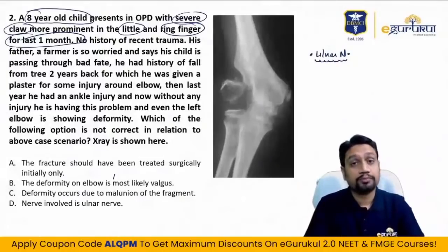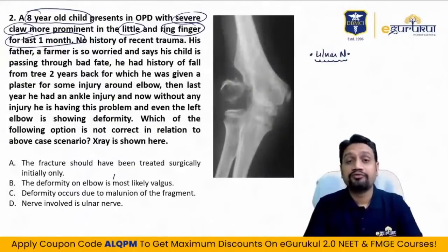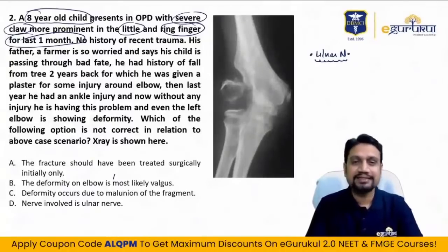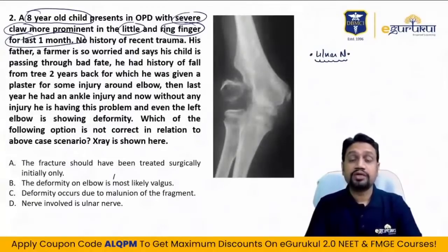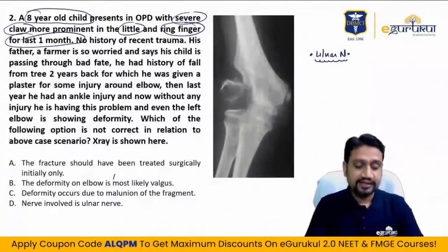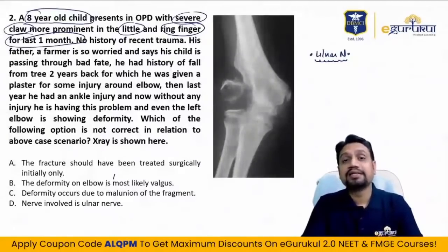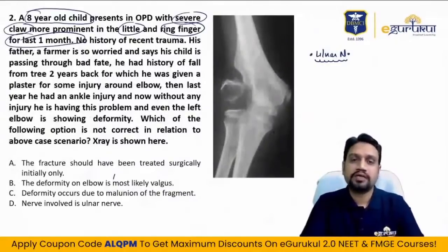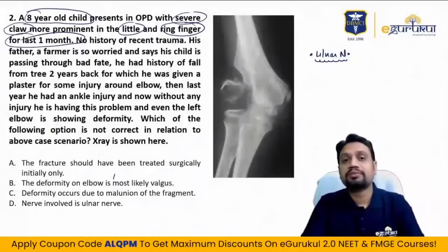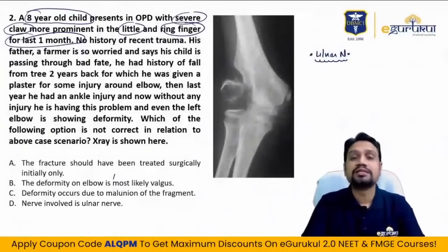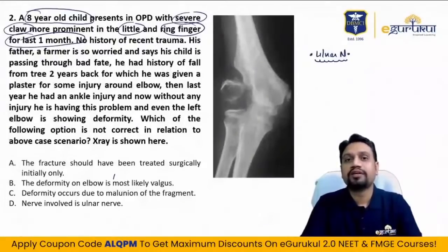No history of recent trauma. His father says the child is passing through bad fate. But the child had a history of fall from a tree two years back — injury around the elbow for which a plaster was given. Last year he had an ankle injury. Now without injury he is having this problem, and even the left elbow is showing some deformity.